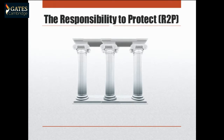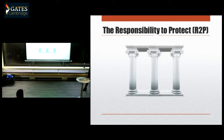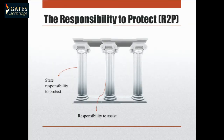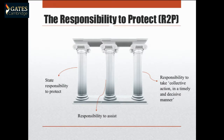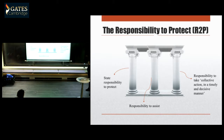In 2009, the UN Secretary General released the first report on the responsibility to protect and offered a way of structuring it into three pillars. The first pillar was about state responsibility to protect their populations — populations, not just citizens. The second pillar was about the international society's responsibility to assist states that are willing but unable to protect their populations, through encouragement, capacity building, or military interventions with the consent of the state. In cases where states are unwilling and unable, the international society has the responsibility to take collective action in a timely and decisive manner.